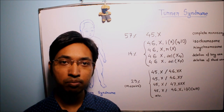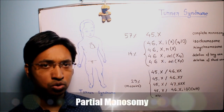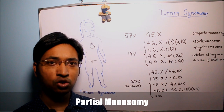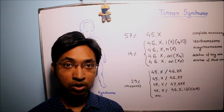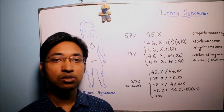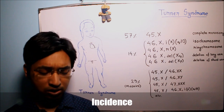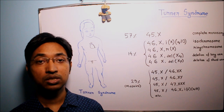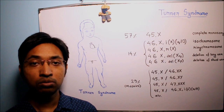In partial monosomy, a portion of a chromosome has only one copy whereas the rest of the chromosome has two copies. Now we will move on and talk about the incidence of Turner syndrome — this is very important for your multiple choice examinations. The incidence of Turner syndrome is one in 2500 live born females.